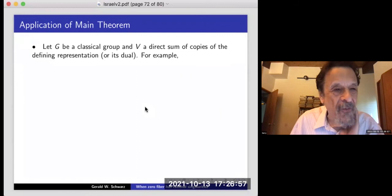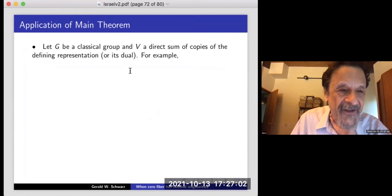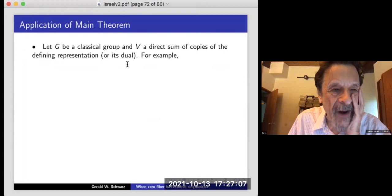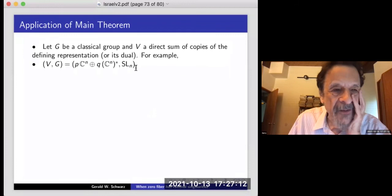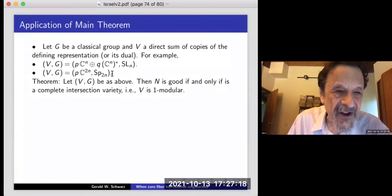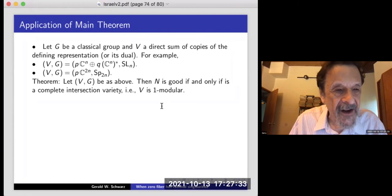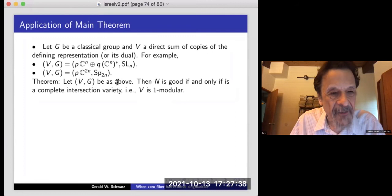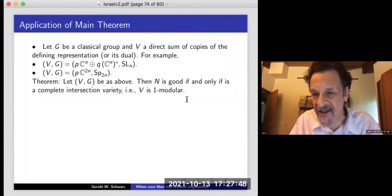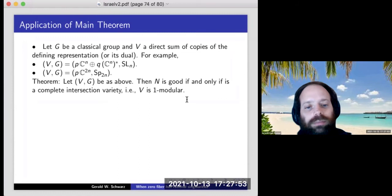Here's something off to the side: let G be a classical group and V a direct sum of copies of the defining representation or its dual — for example, copies of C^N plus C^{N*} for SL_N, or copies of the standard representation of a symplectic group. These are not necessarily orthogonal. But by tricks, we can prove: for a classical representation of a classical group, N is good if and only if it is a complete intersection variety, i.e., if and only if V is 1-modular. So for this classical case, as soon as V is 1-modular, N is perfectly wonderful — you don't need dim G-modular as the general theorem requires.